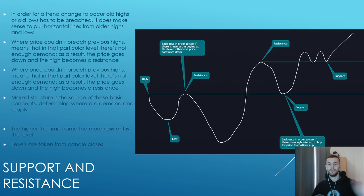For support and resistances, we have a high, we have a low, we have a resistance here which was created. We backtest in order to see if there is interest in buying at this level; otherwise price continues down. We test the previous high just to see if there is enough interest for price either to slice through it and go higher, or we just test it, see the potential and go lower.